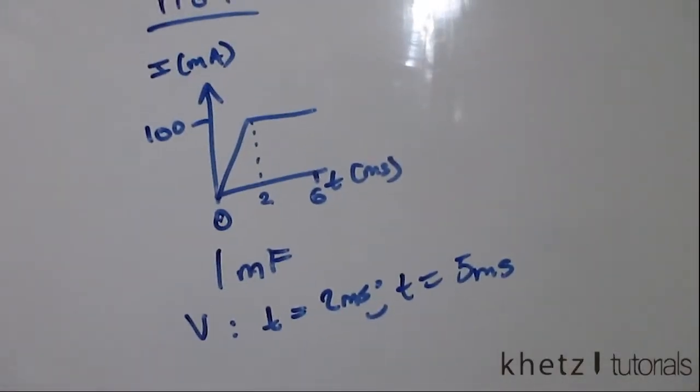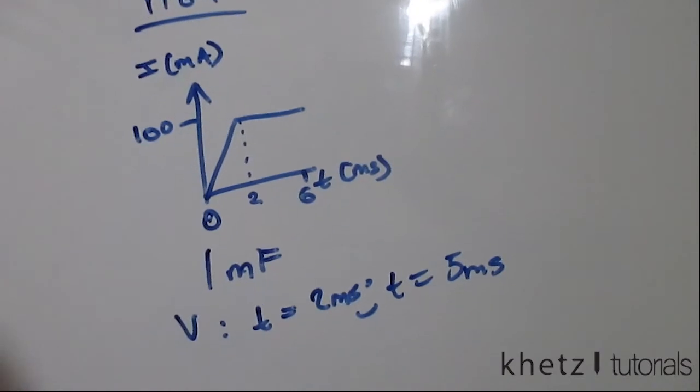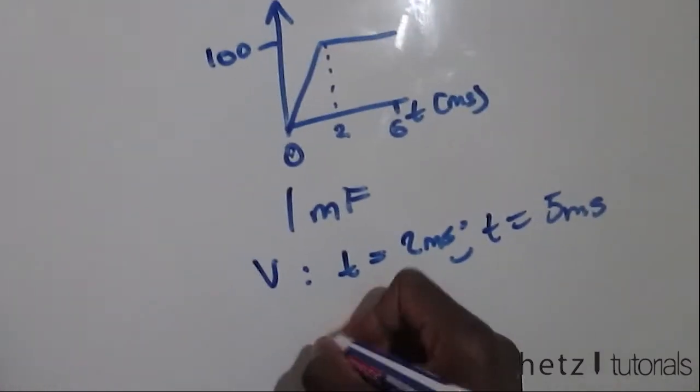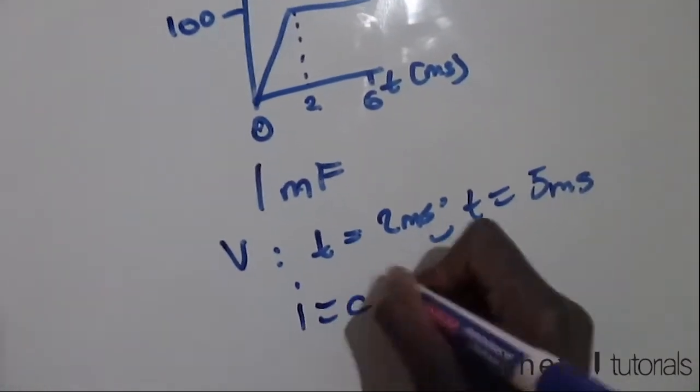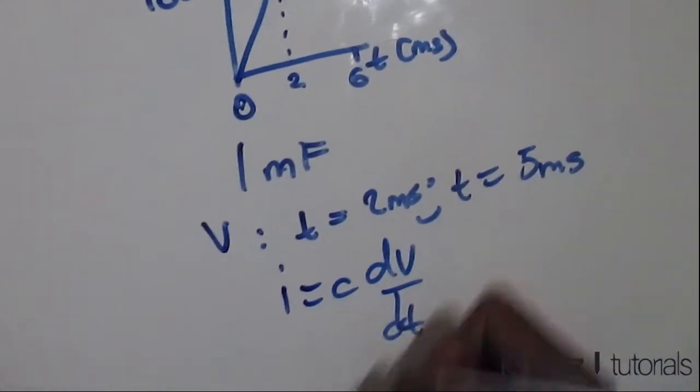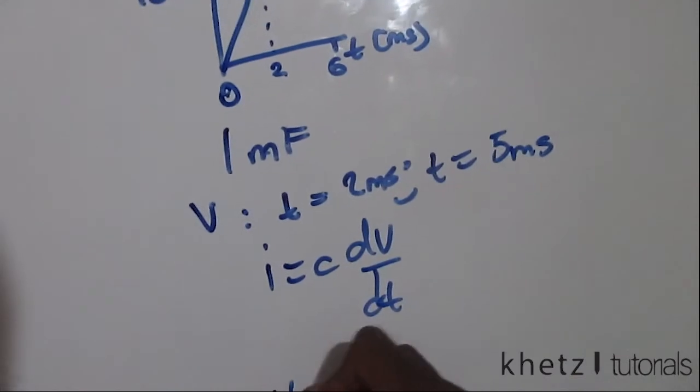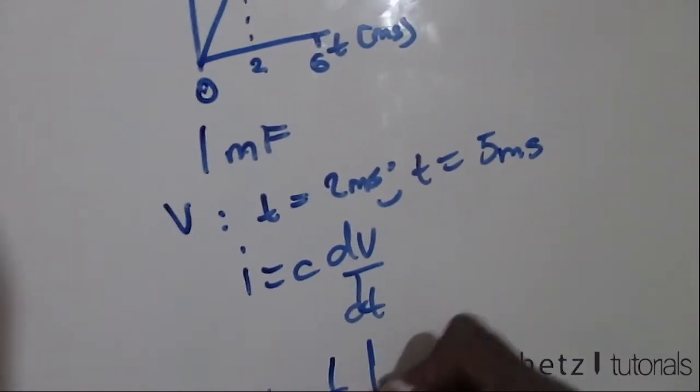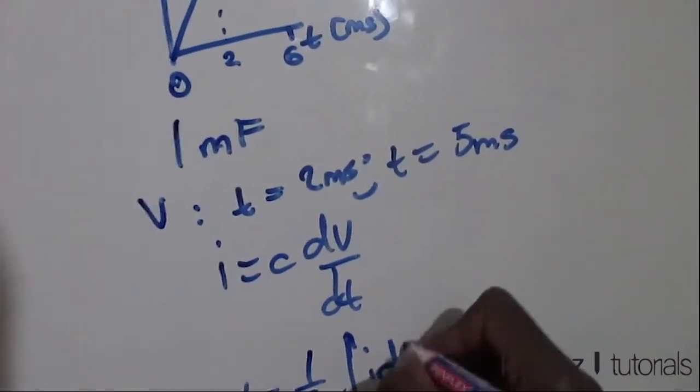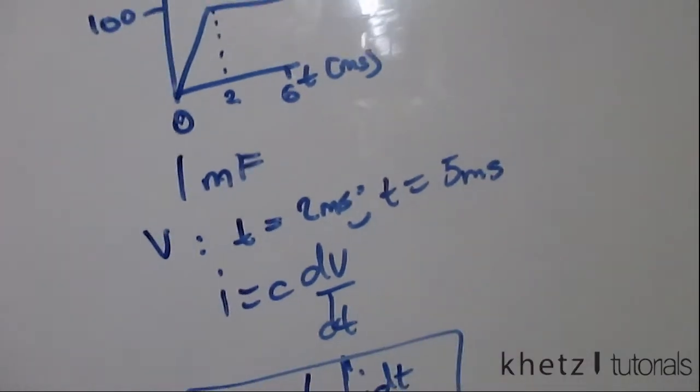Now there is the long way and the easy way to actually do this. Since i equals c dv/dt, then v equals one over c integral of i dt.